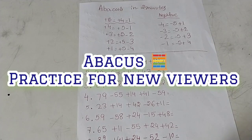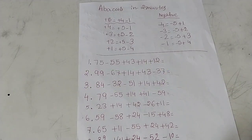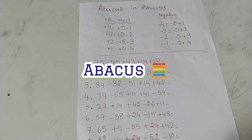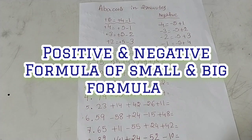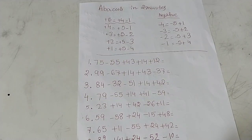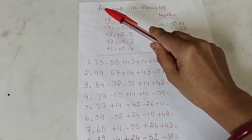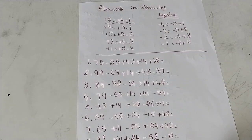After many days I didn't make any abacus-related video. I already started the Vaidik Math video, so those who are new viewers of my channel already know that. But for new and old viewers alike, I am making today one abacus video. Hope you remember your formulas for positive and negative big number and small friend formula. Plus five means positive and negative — like plus four equals plus five minus one.